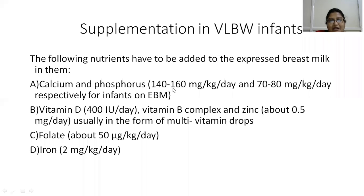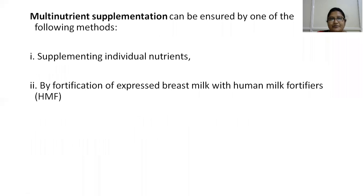Supplementation doses for VLBW: calcium 140 to 160 mg per kg per day, phosphorus 70 to 80 mg per kg per day, vitamin D 400 international units per day, B-complex and zinc 0.5 mg per day, folate 50 micrograms per kg per day, and iron 2 mg per kg per day — supplement until 40 weeks of gestation. When the preterm reaches 40 weeks of gestation, shift only to vitamin D and iron. Multi-nutrient supplementation can be ensured by supplementing individual nutrients at regular intervals to prevent sudden increase in osmolality, or by fortification of expressed breast milk with human milk fortifiers, which can be powder-based or milk-based (bovine or human). Powder-based fortifiers are used in regular practice.